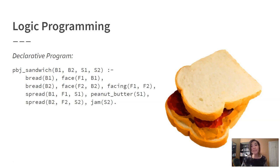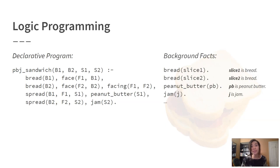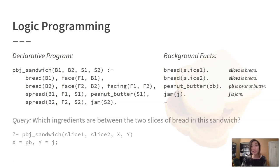Having specified this declarative knowledge, along with some additional background knowledge about existing objects and relations, we can then ask queries about any other facts or relations that may be implied. For example, a question like: which two ingredients are between the slices of bread in the particular sandwich? PB and J, of course.